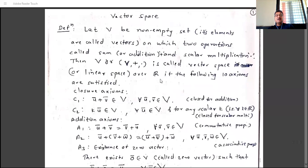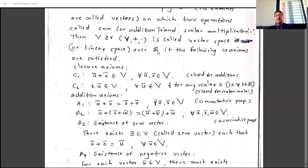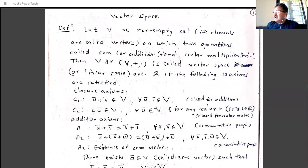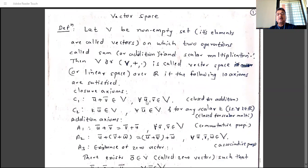The bar is used to separate elements of R from elements of V. This vector is not the usual physics vector with magnitude and direction — it simply means an element of the vector space. So the first property states that V is closed under addition, meaning the addition of every two elements of V belongs to V.